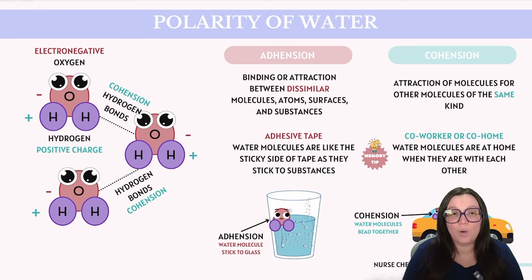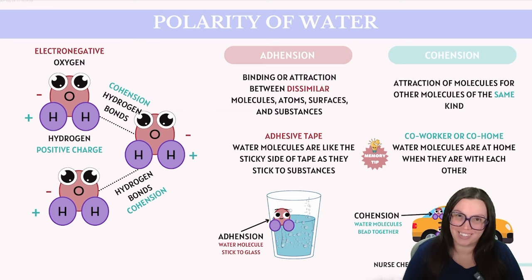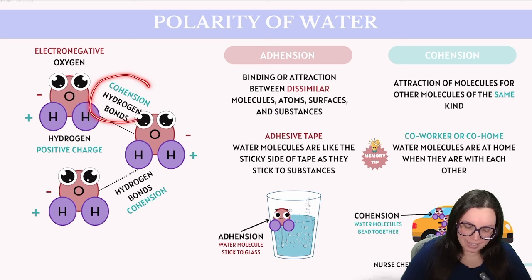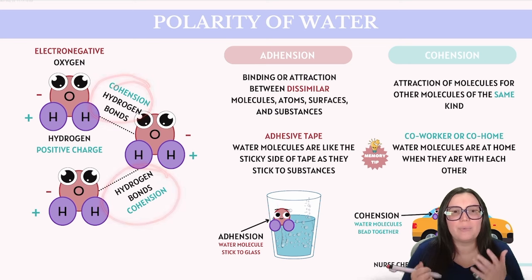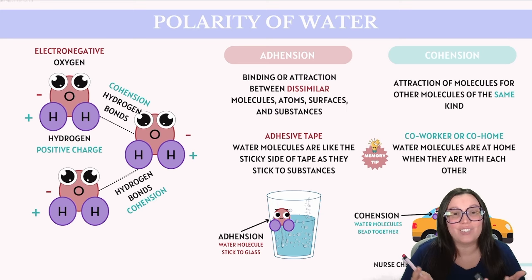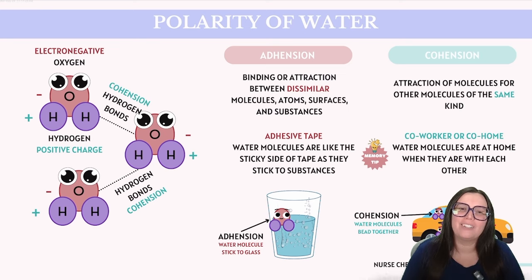This polarity allows water molecules to easily bond with each other. The slightly negative oxygen of one molecule can attract the slightly positive hydrogen of another, forming a hydrogen bond. These bonds are what give water its special properties, such as its ability to dissolve many substances, its surface tension, and its relatively high boiling point compared to other molecules of similar size.